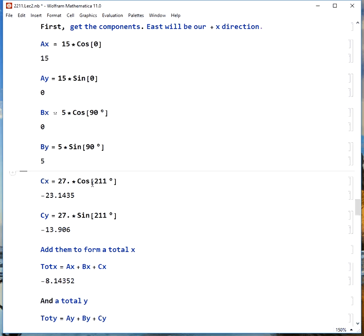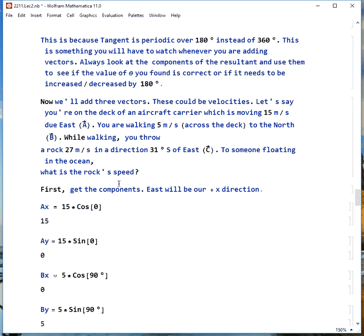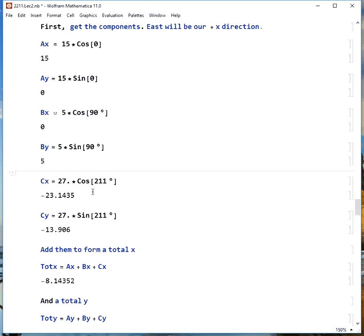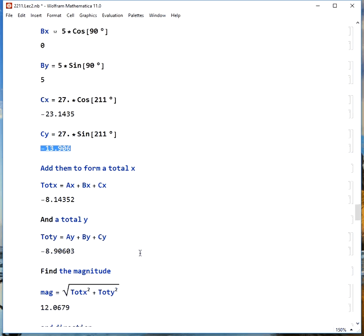Finally, what about the rock? Here, its angle is going to be 211 degrees because remember we said we're throwing this thing 31 degrees south of east. So that would, we'd have to add 180 to get 211 relative to east if we're going counterclockwise. 27 times cosine of 211 is negative 23.1. The Y component, 27 times sine of 211, negative 13.91. Now we add up the X pieces, 15 and 0 and negative 23. We get negative 8.1. We add up our Y pieces, 0 and 5 and negative 13.9, and we get negative 8.9.